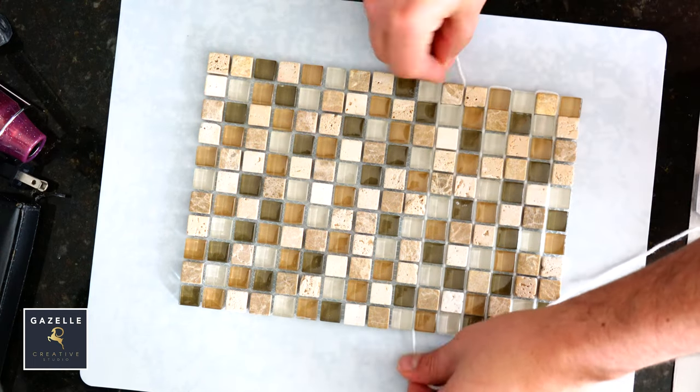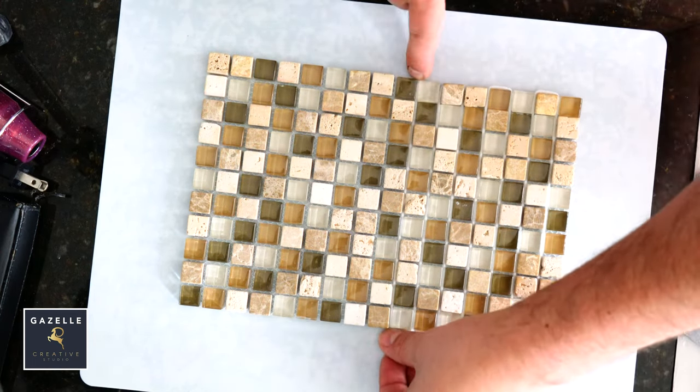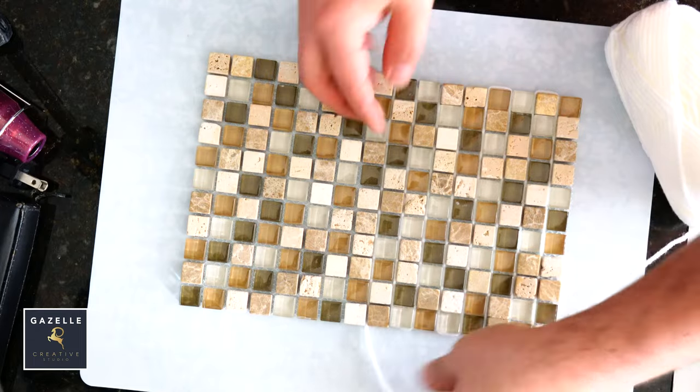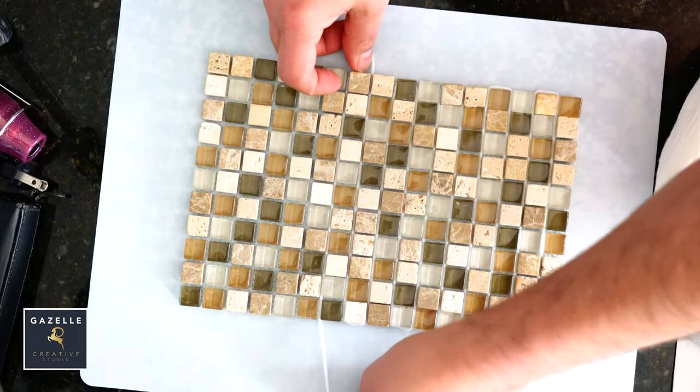This yarn will cover the lines nicely. You can use thicker yarn for better coverage. Make sure to leave some slack on both ends to tie them.